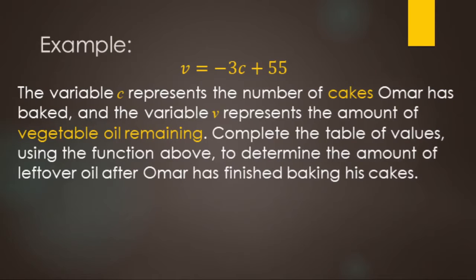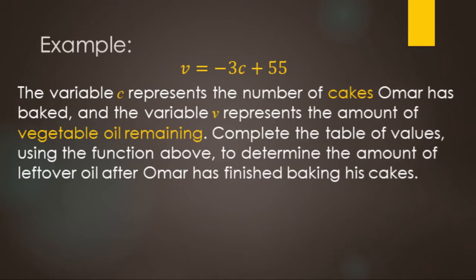Specifically, C represents the number of cakes that Omar has baked, and V represents the amount of vegetable oil remaining — in ounces, cups, or whatever unit — but it's just the amount remaining.